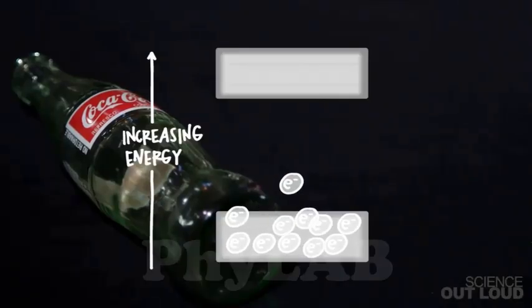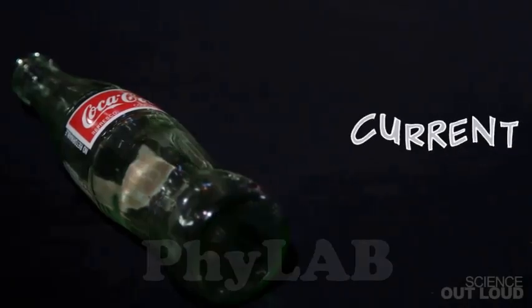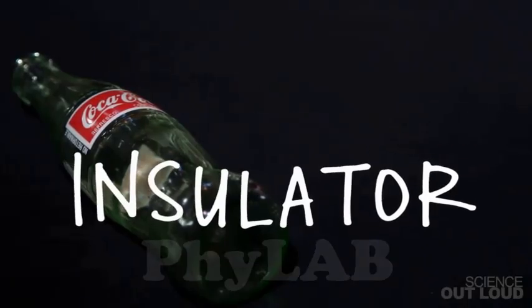If there's a huge gap between the lower energy levels and the higher ones, it's hard for electrons to jump to the higher ones. So current can't flow, and it's an insulator like this glass.